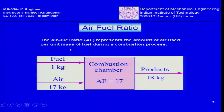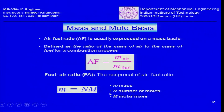The air-fuel ratio represents the amount of air used per unit mass of fuel during a combustion process, expressed on a mass basis. For example, if you take 1 kg of fuel and 17 kg of air, the air-fuel ratio is 17. Since mass is conserved, 18 kg of products will result along with the heat of combustion. The air-fuel ratio is expressed as mass of air divided by mass of fuel.